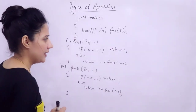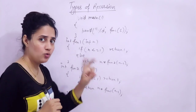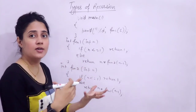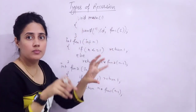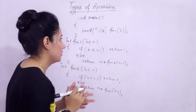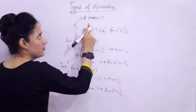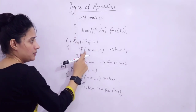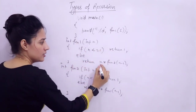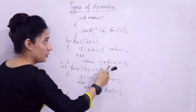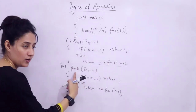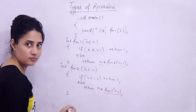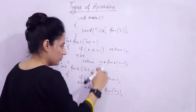Here is a code example of indirect recursion using two functions: function1 and function2. From main, we call function1 passing 5. In function1, we check: if n <= 1, return 1; else return n * function2(n-1). In function2, we similarly check the condition and return n * function1(n-1). This creates a circular calling pattern between function1 and function2. Remember to declare prototypes for both functions before main.